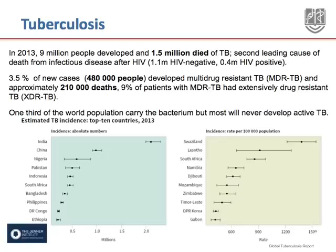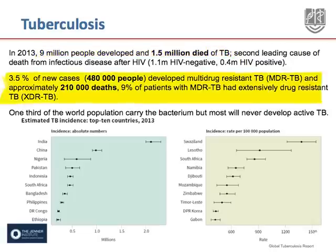In the latest report by the World Health Organization, it was estimated that there were 9 million new cases of TB and 1.5 million deaths in 2013. 3.5% of new cases were infections with multi-drug resistant strains, and of those cases 9% were infections with extensively drug resistant strains.